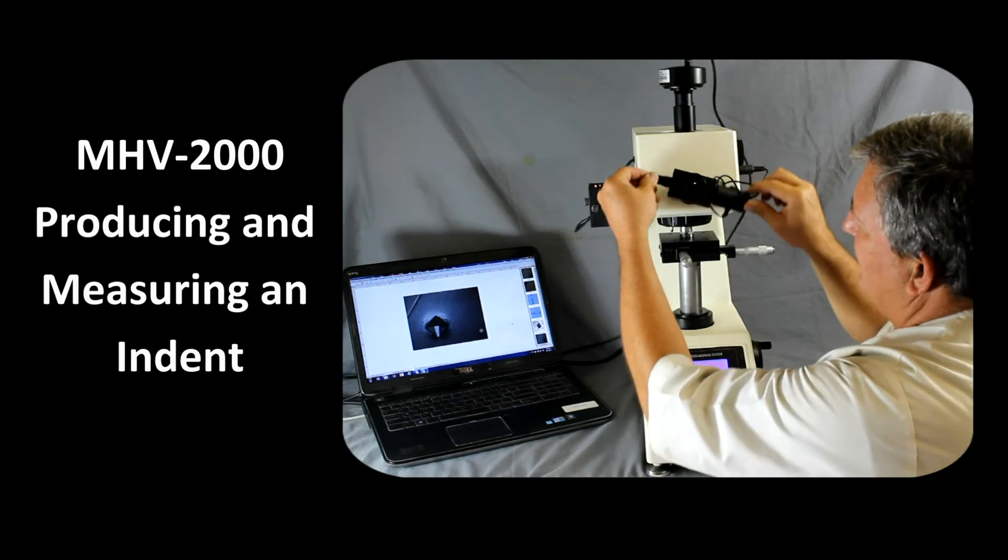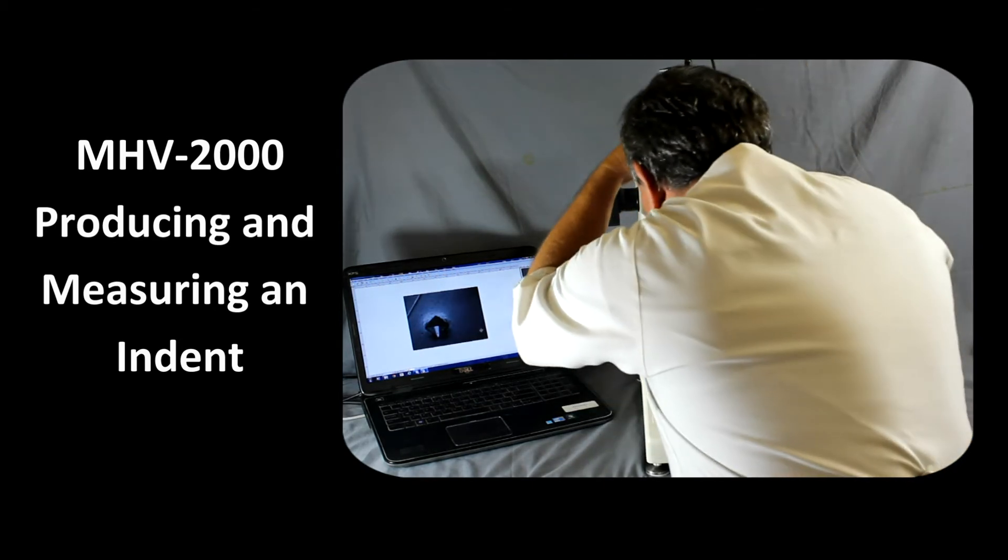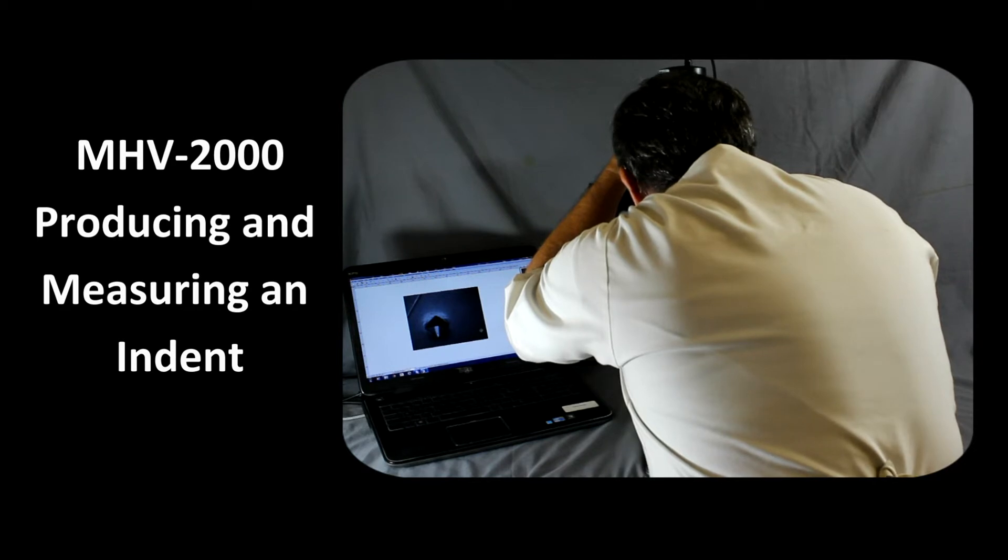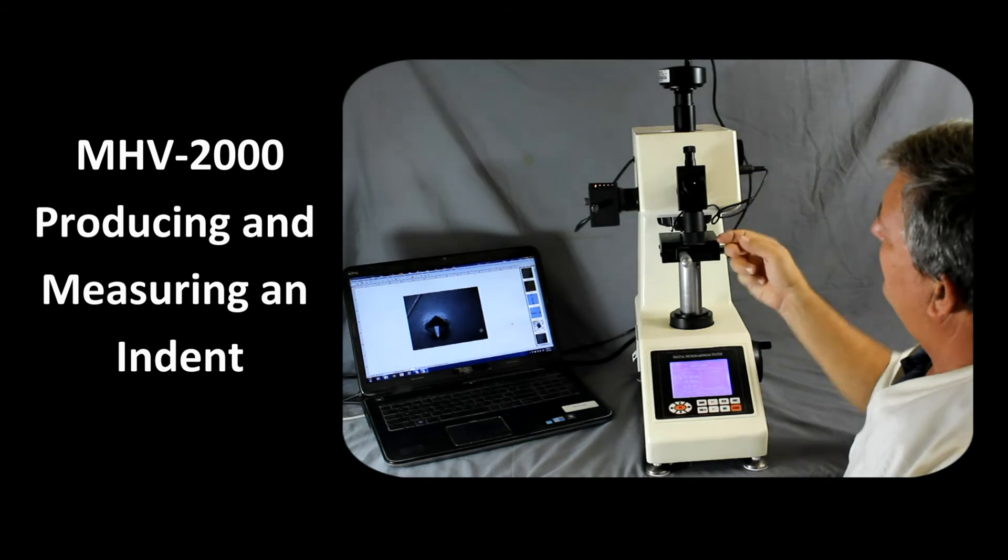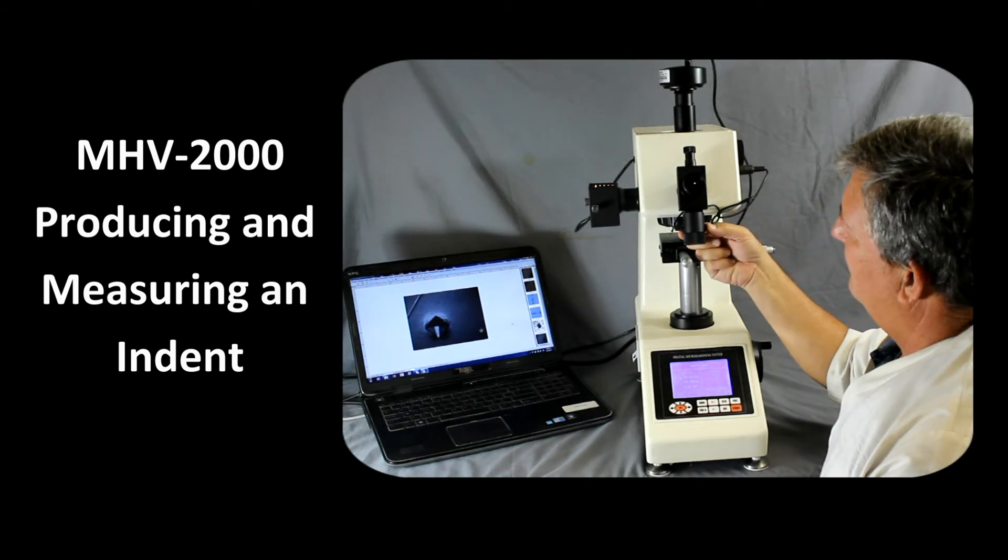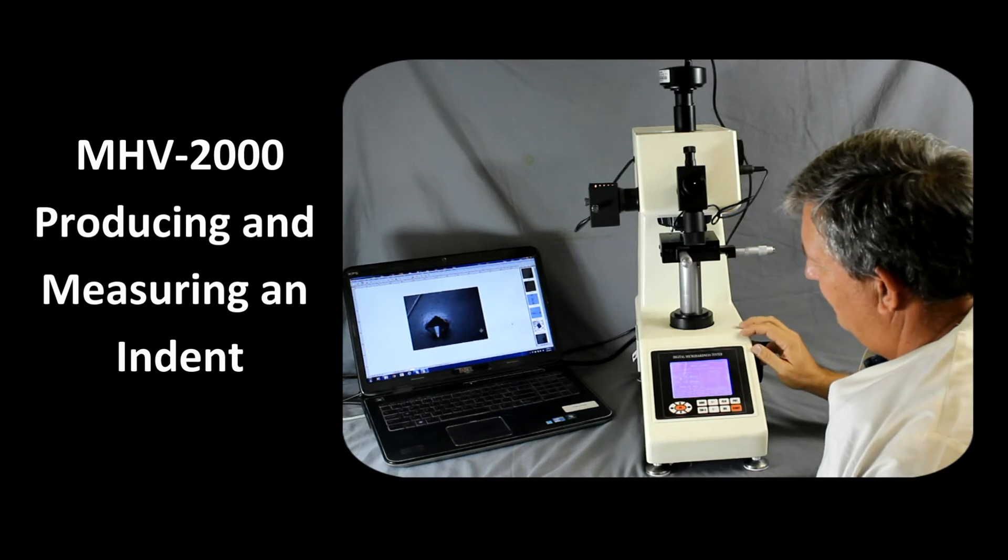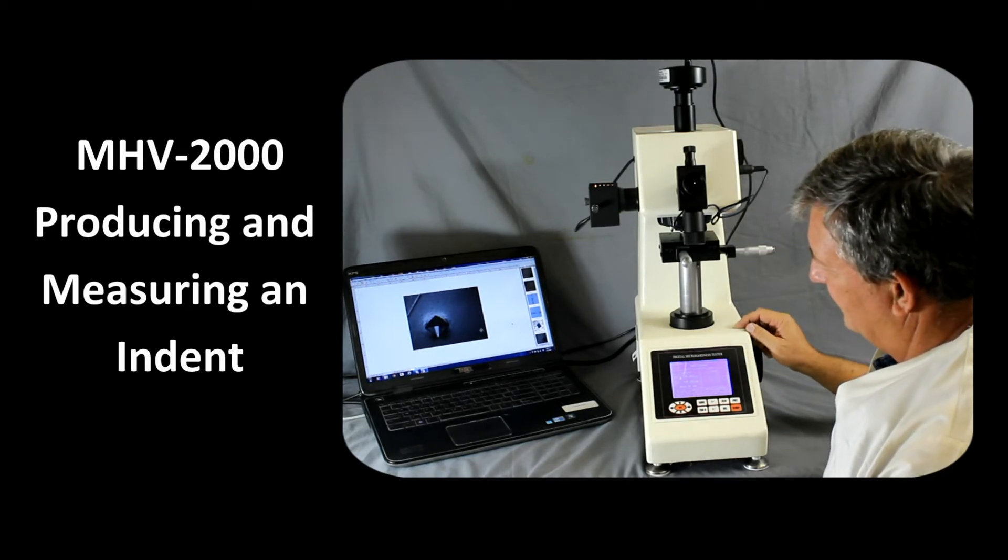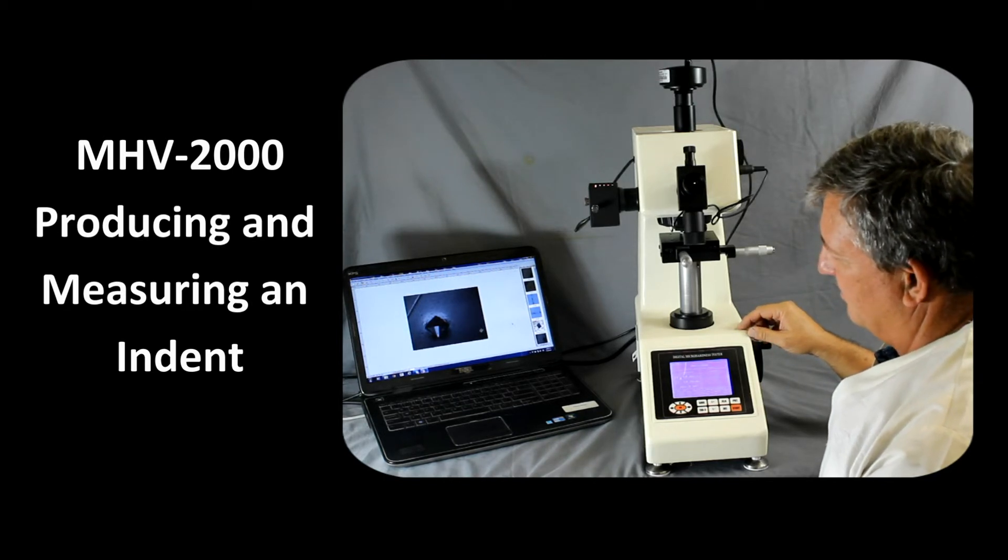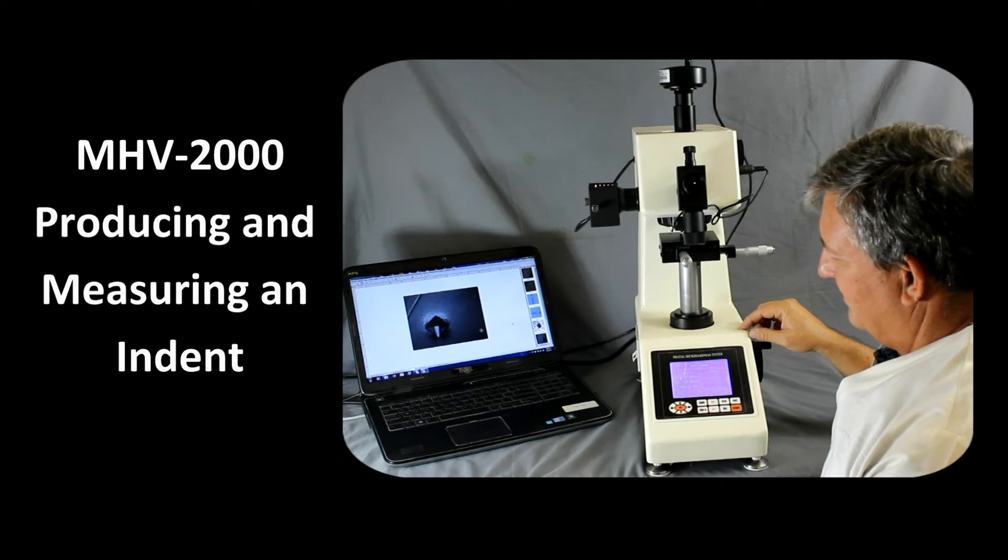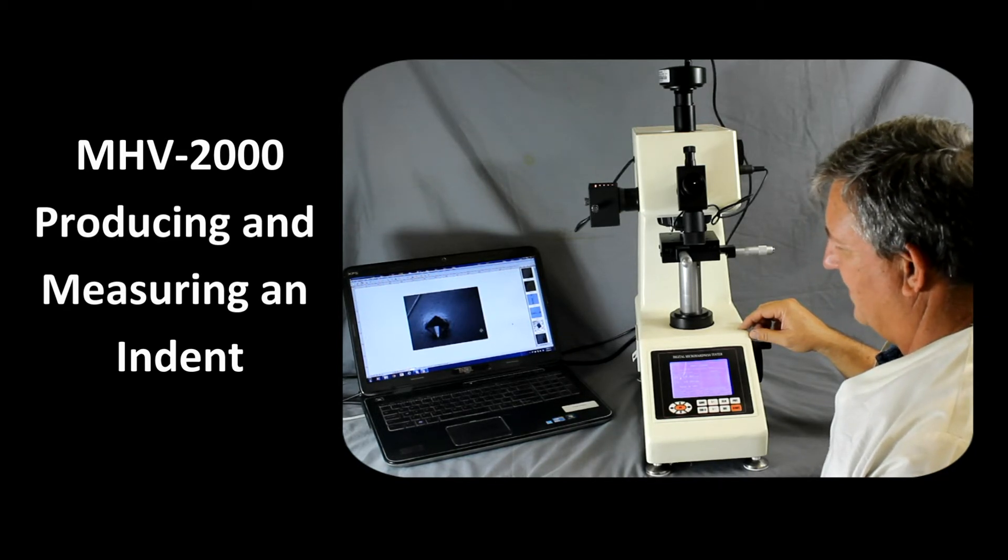And then for Vickers, we need to rotate this 90 degrees and measure the other indent. So again, we'll line it up. And then once that's selected, we'll go ahead and press the button. And now our measurement is given here. So the test block is a 462 test block and we're measuring 460.8. So I would say that we're within the spec for that measurement.